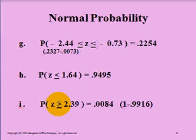Problem I is a probability that Z is to the right of or above the value of 2.39. We have to look up the value of 2.39,